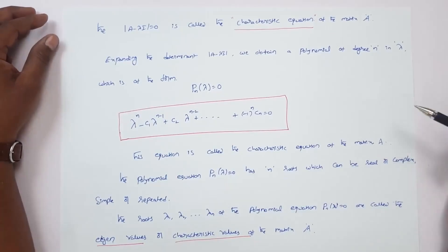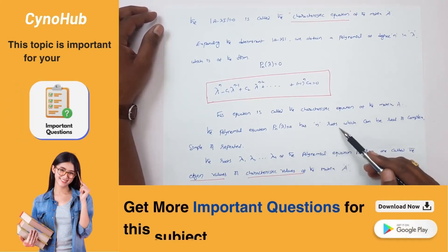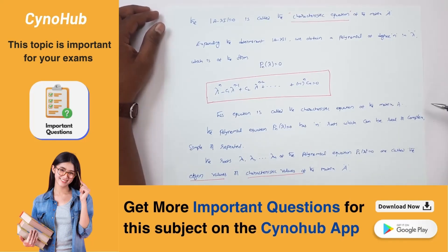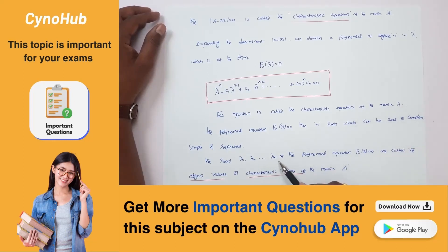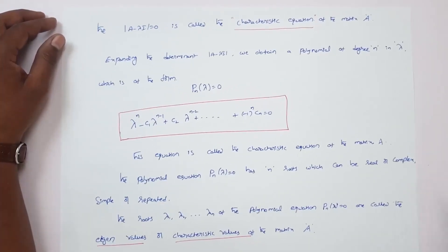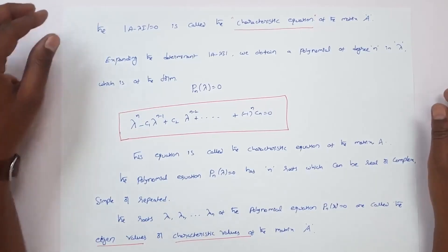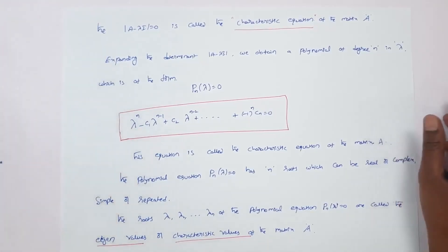The polynomial equation p_n(lambda) has n roots, which may be real or complex, simple or repeated. The roots lambda_1, lambda_2, and so on through lambda_n of the polynomial equation p_n(lambda) equals zero are called the eigenvalues or characteristic values of the matrix A.